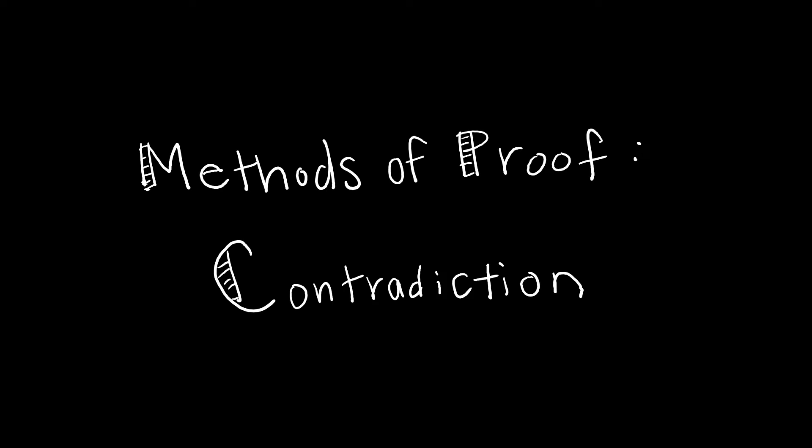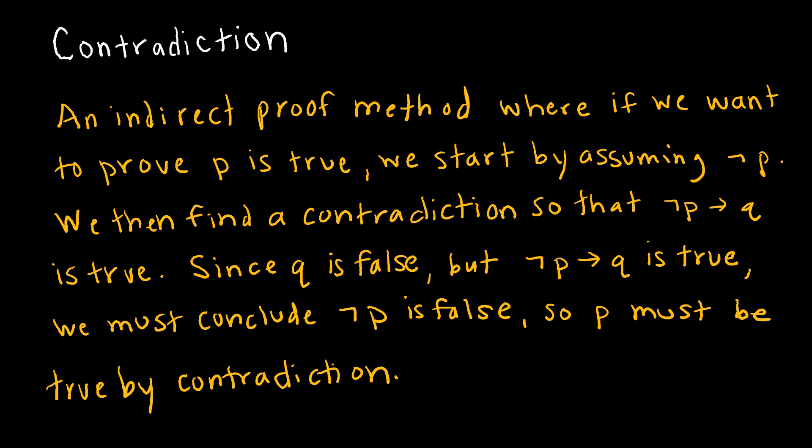In this video, we are going to do a couple of proofs using contradiction. Contradiction is an indirect proof method where if we want to prove P is true, we start by assuming that it is not true. Then we are going to work to find a contradiction so that if not P, then Q is true, which would make Q false. But if not P, then Q is true, so we must conclude that not P was false. That is a proof by contradiction. That makes much more sense when we actually do one.